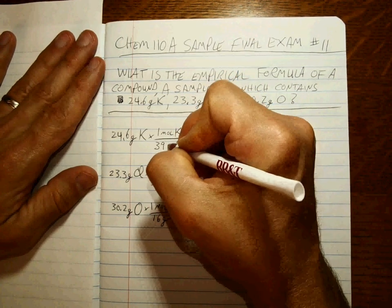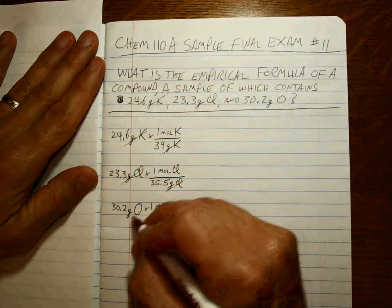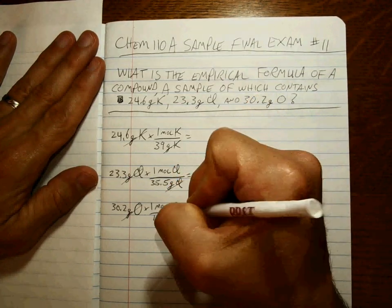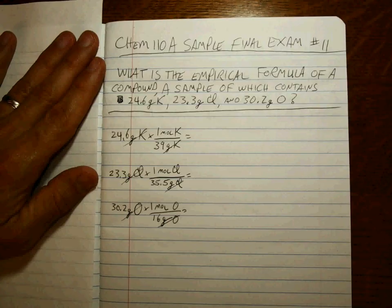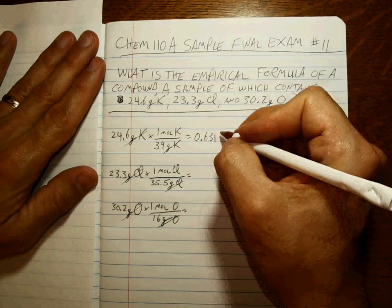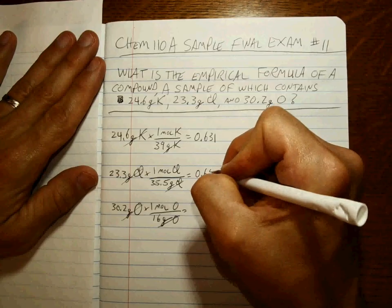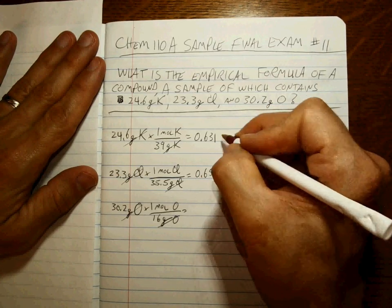Okay, the results of this calculation gives me the following moles: 0.631 moles of the potassium, 0.656 moles of the chlorine, and 1.89 moles of the oxygen.